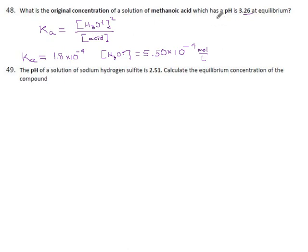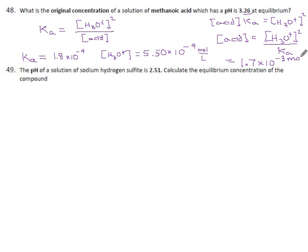If we multiply both sides by acid concentration, we get acid concentration times Ka equals H3O squared. And then we divide both sides by Ka, and we get acid concentration should be H3O squared over the Ka. H3O is 5.5 times 10 to the minus 4, remember to square it, divided by our acid constant 1.8 times 10 to the minus 4. And so the concentration of our acid should be 1.7 times 10 to the minus 3. That's a concentration, so it's in moles per liter.